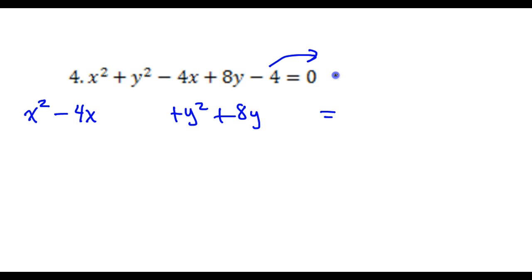Now this negative 4 is in the way. So just go ahead and add 4 to both sides. So that's going to give me equals 4 over there.